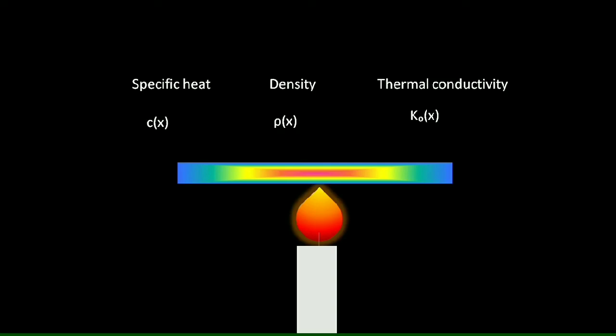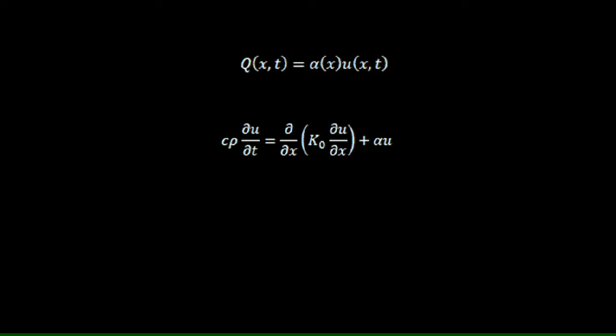Next, we define the heat source as the following equation. The general form of the heat flow in one dimension is the following homogeneous differential equation.